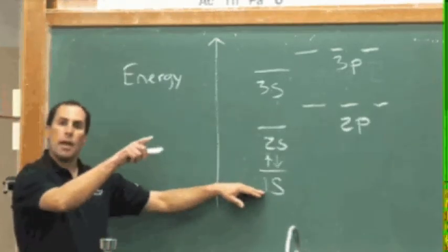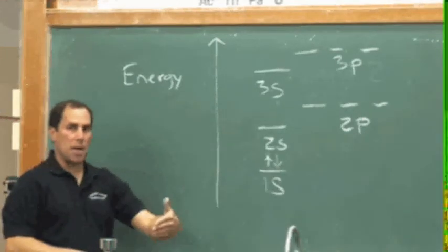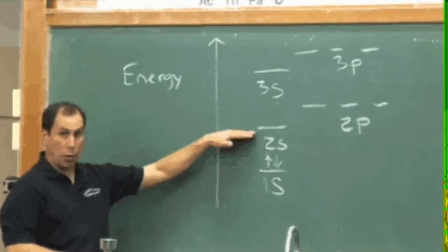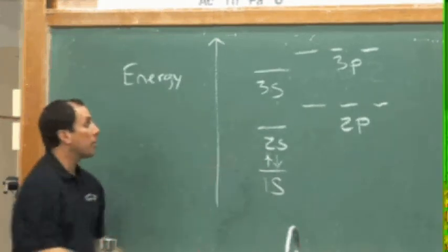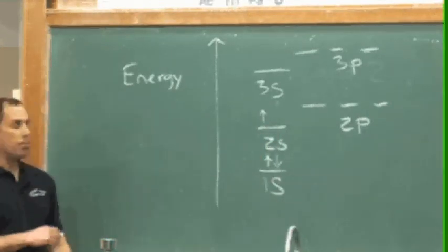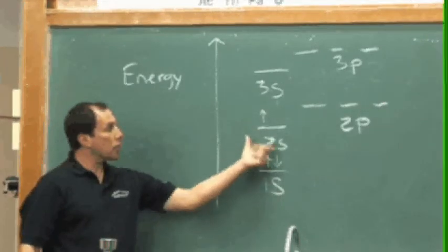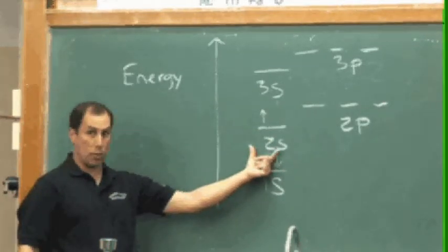When we go to the periodic table and start over again, meaning we go hydrogen, helium, and then we drop down a row, what's going to happen with that row is that we're going to start a new principal quantum number. So we're going to go from one to two. Lithium is element number three. Lithium has two electrons in a 1s orbital, and one electron in a little bit larger spherical shaped orbital we call the 2s orbital.